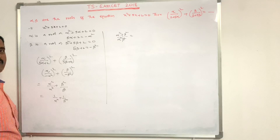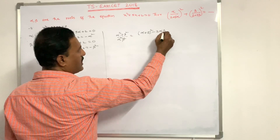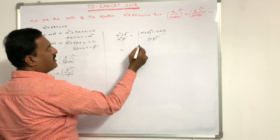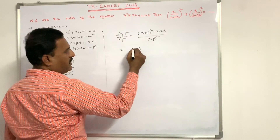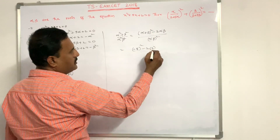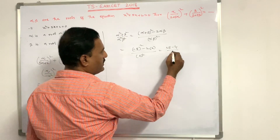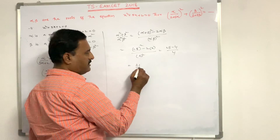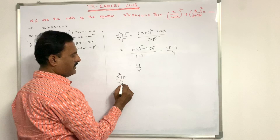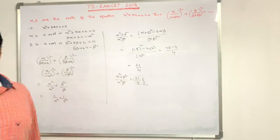Now α² + β² = (α + β)² - 2αβ. From x² + 5x + 2 = 0: α + β = -5 and αβ = 2. So (α² + β²)/(αβ)² = [(-5)² - 2(2)] / (2)² = (25 - 4)/4 = 21/4. The value of the expression is 21/4. That is the answer.